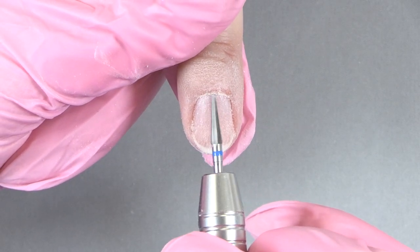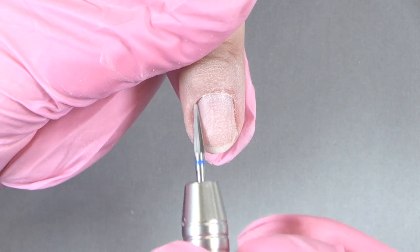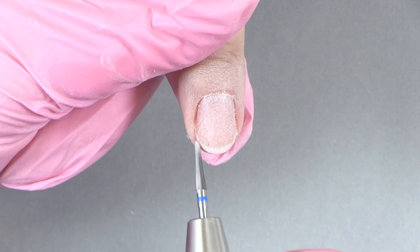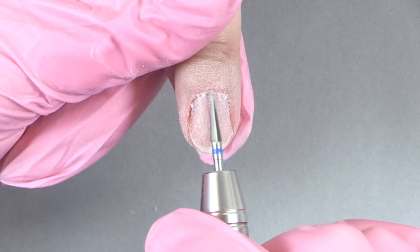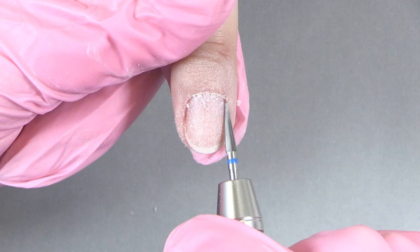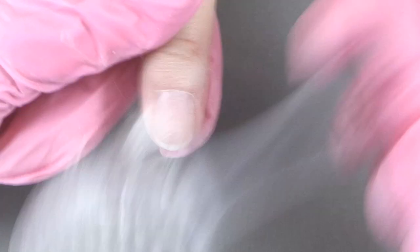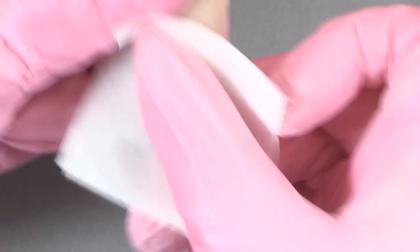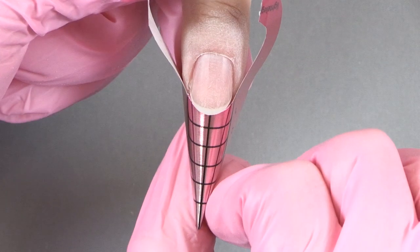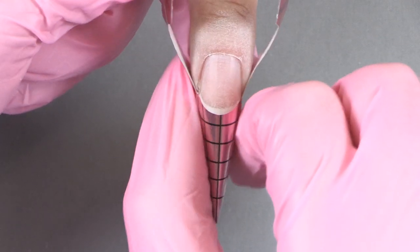Once we've done that, we're going to take our zippy file with the preppy bit. This bit is magical. It just gets that cuticle so cleaned up and it never burns or hurts the client. Once we file, we always want to cleanse. Now we're ready to extend our nail.